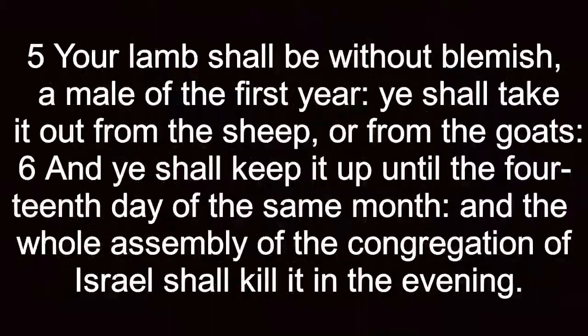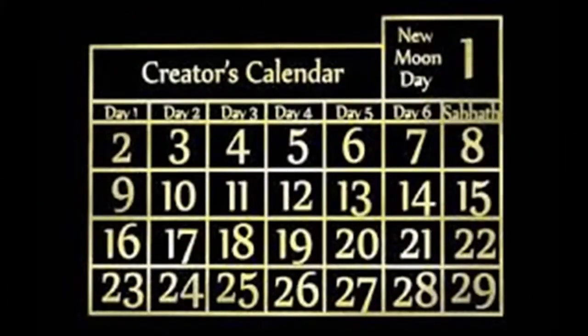Verse 5: 'Your lamb shall be without blemish, a male of the first year; you shall take it out from the sheep or from the goats.' Now if you've been paying attention, I stated the 8th, the 15th, the 22nd, and the 29th day of every month is a Sabbath day. So if this is the 14th day of the first month, this is also a preparation day. Now I'm going to jump to verses 12 through 21.